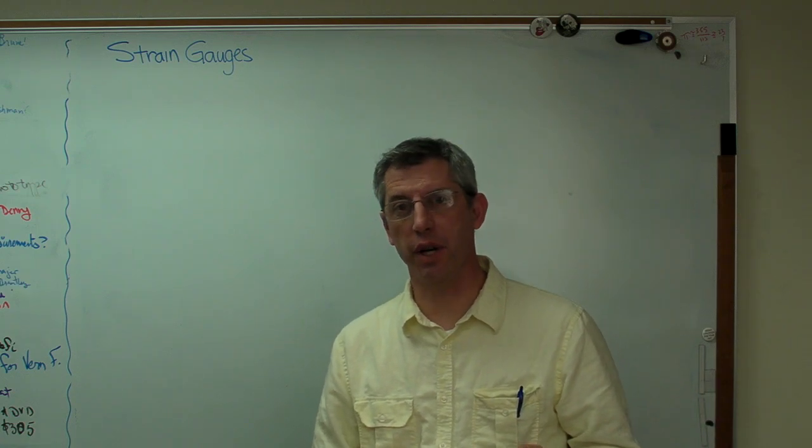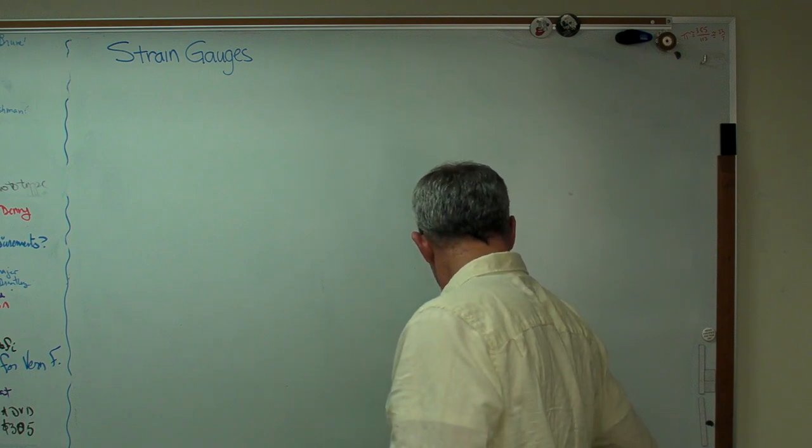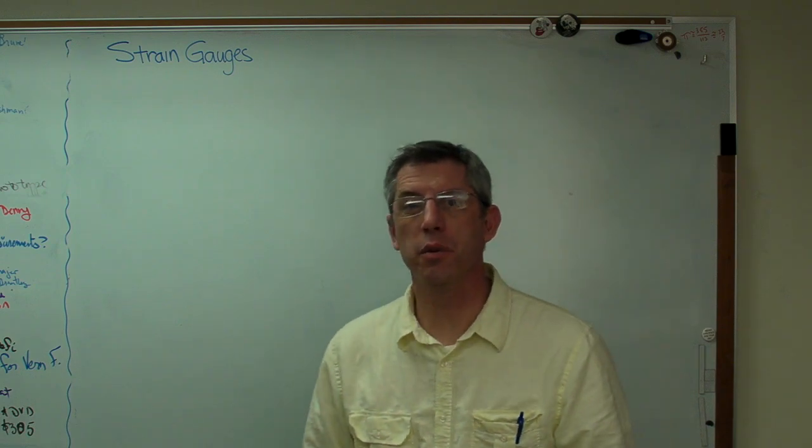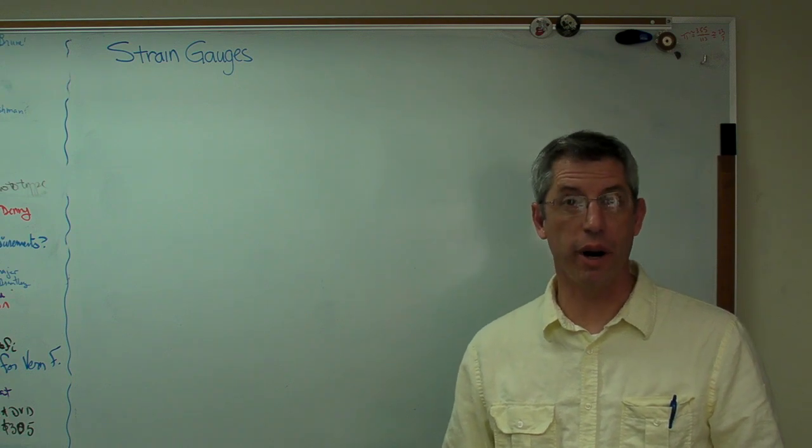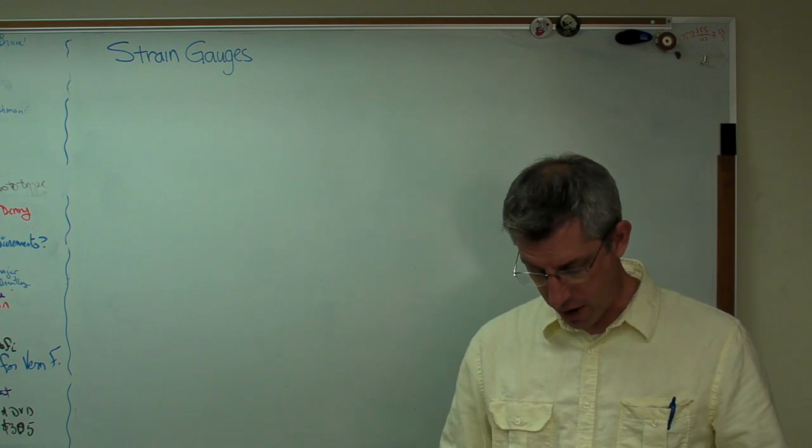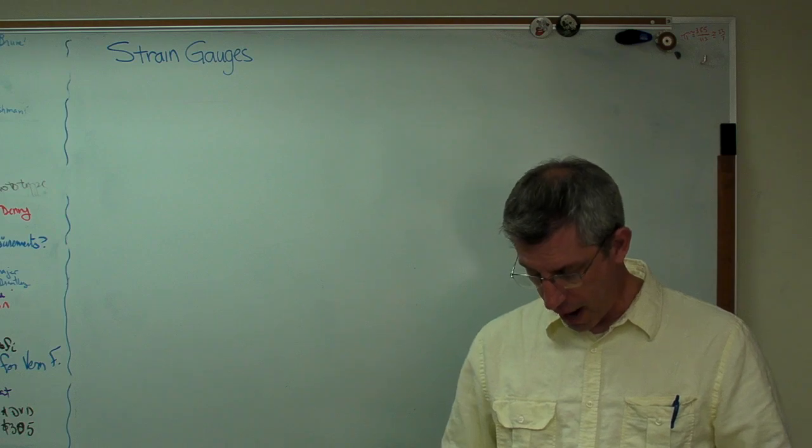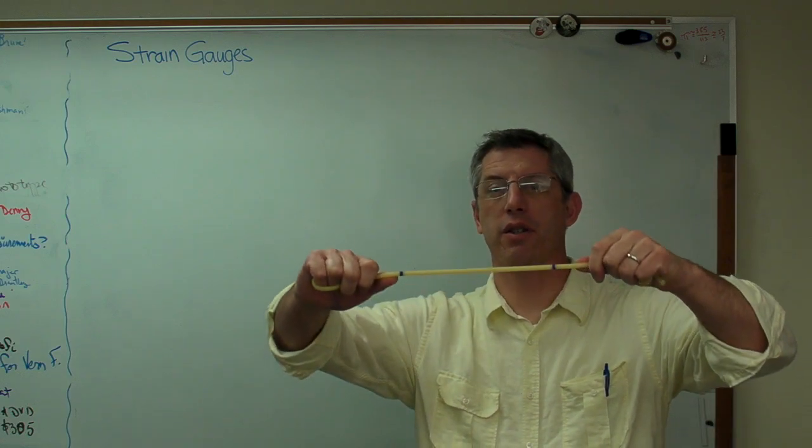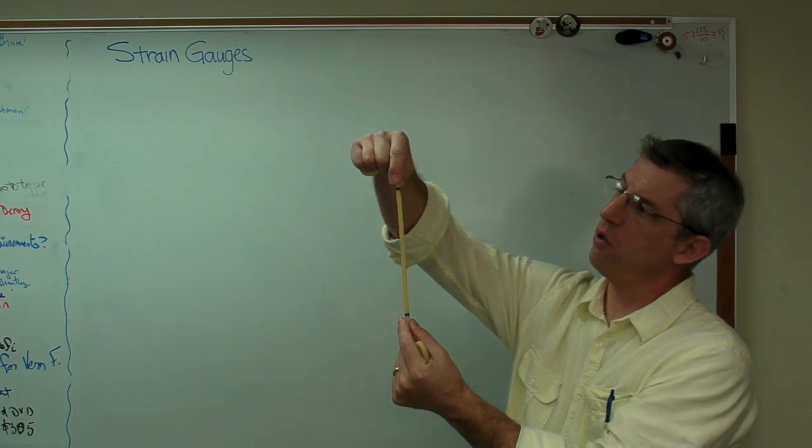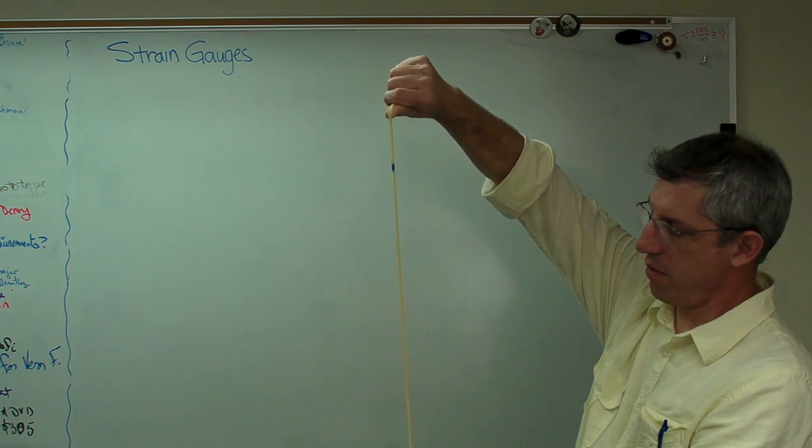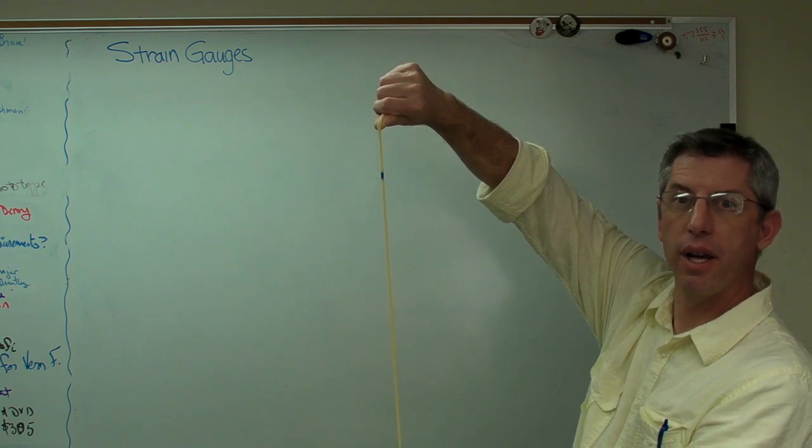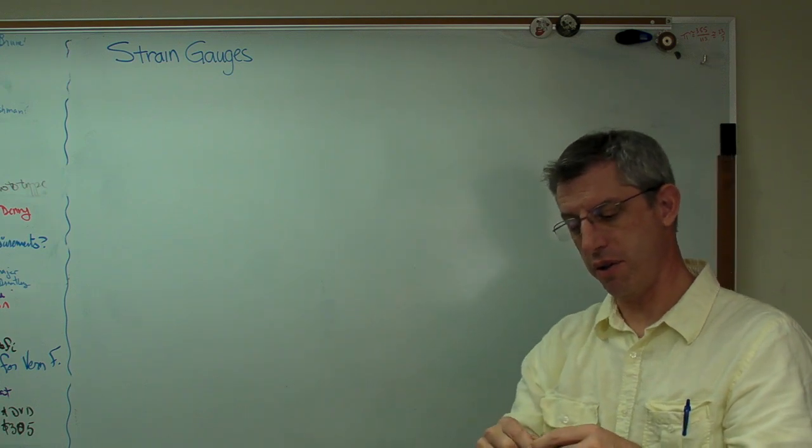So let's start with the basics of a strain gauge. A strain gauge basically works on the principle that if you stretch a wire, its resistance goes up, and if you shorten a wire, the resistance goes down. It's too hard to show you an actual wire, so I've got a piece of latex tubing here. You can see I've put two marks on it right there, and this is just done with a pen. If I stretch it out like that, a couple of things happen: it gets longer, and the diameter goes down.